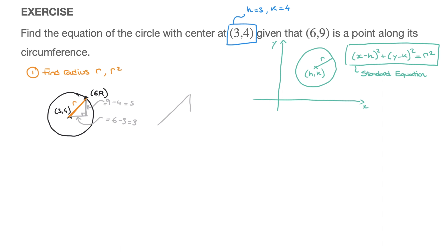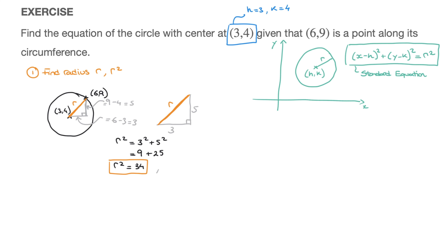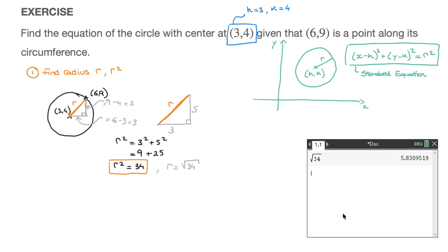To find the radius r, we're dealing with a right-angle triangle where r is the hypotenuse and we have side lengths 3 and 5. Using Pythagoras' theorem, r² equals 3² + 5², which gives us 9 + 25 = 34. So r² equals 34. We could also state that r equals the square root of 34, which is approximately 5.83.